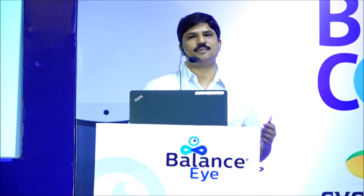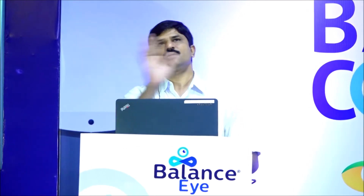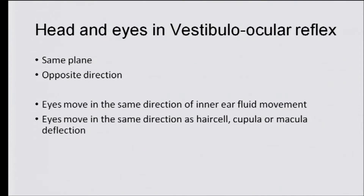Problems of the vestibular system show up as abnormalities of these three functions: postural stability problems, gaze stability problems — not able to see well, or objects appearing to move around. Now, coming to the core laws: head and eyes in the vestibulo-ocular reflex. If my head moves in one direction, the eye has to move in the opposite direction in the same plane to serve the purpose of stability of vision. Eyes move in the same direction as inner ear fluid movement — the same direction as the hair cell cupola and macular deflection.